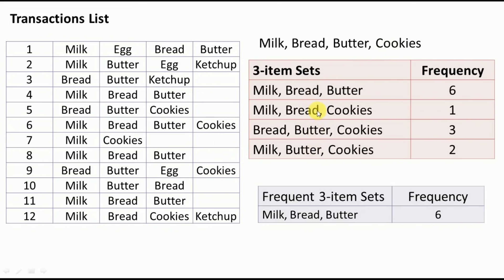We count how many times each three-itemset appears. Milk-bread-butter occurs 6 times across the transactions. The others — milk-bread-cookies, milk-butter-cookies, and bread-butter-cookies — have frequencies of 1, 2, and 3 respectively, all below the 33 percent threshold (which requires at least 4 occurrences).